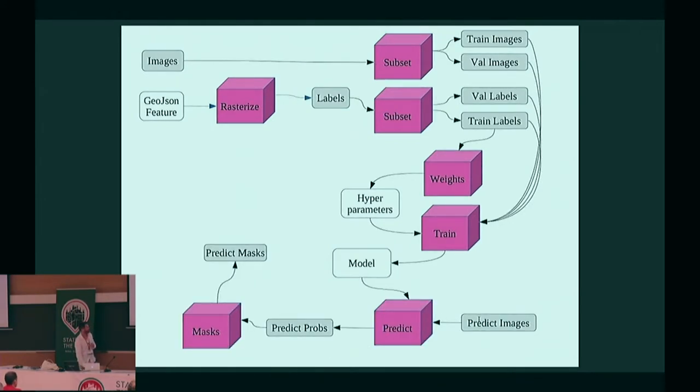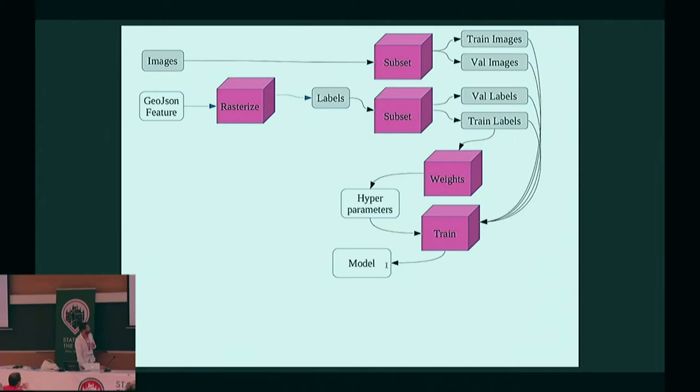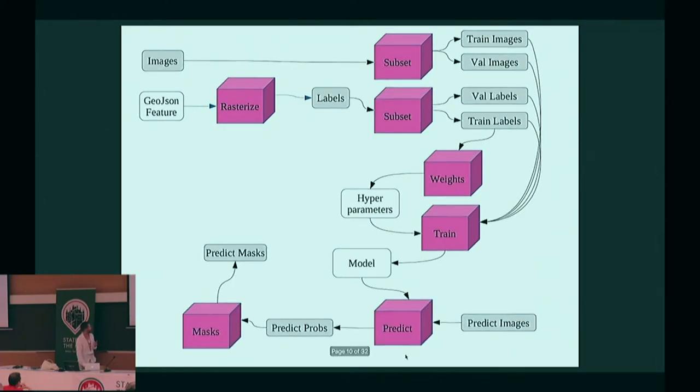Once you train that, your model is ready to perform prediction on it. To perform prediction, you've got another kind of imagery and you predict with your model, get probabilities, and then mask them to get mask prediction. So the process is from image and feature you create a dataset, you train it, you get a model. Once you get your model, you can predict with your model and with other images. Once you're able to use your other image, you can predict mask keys.